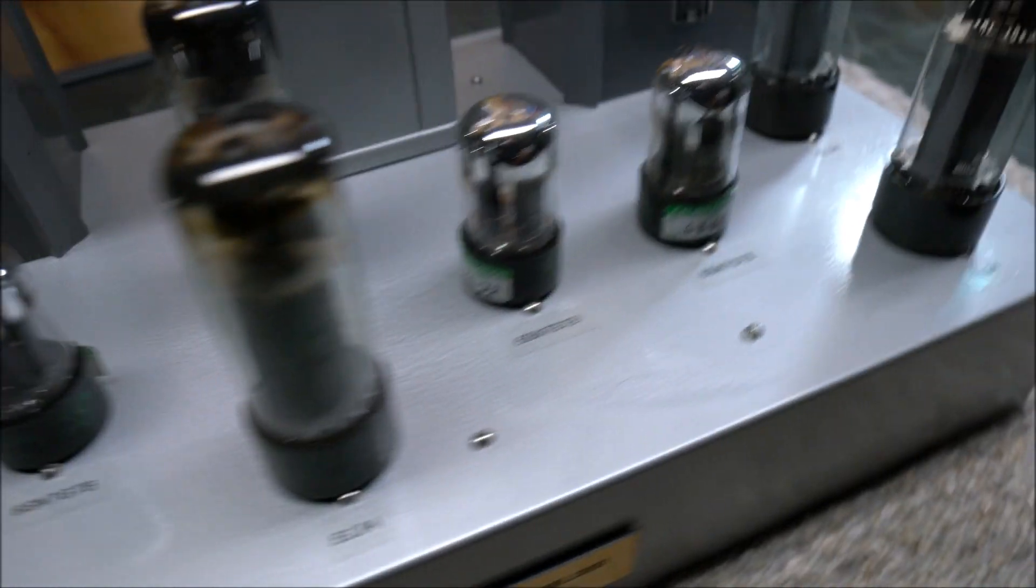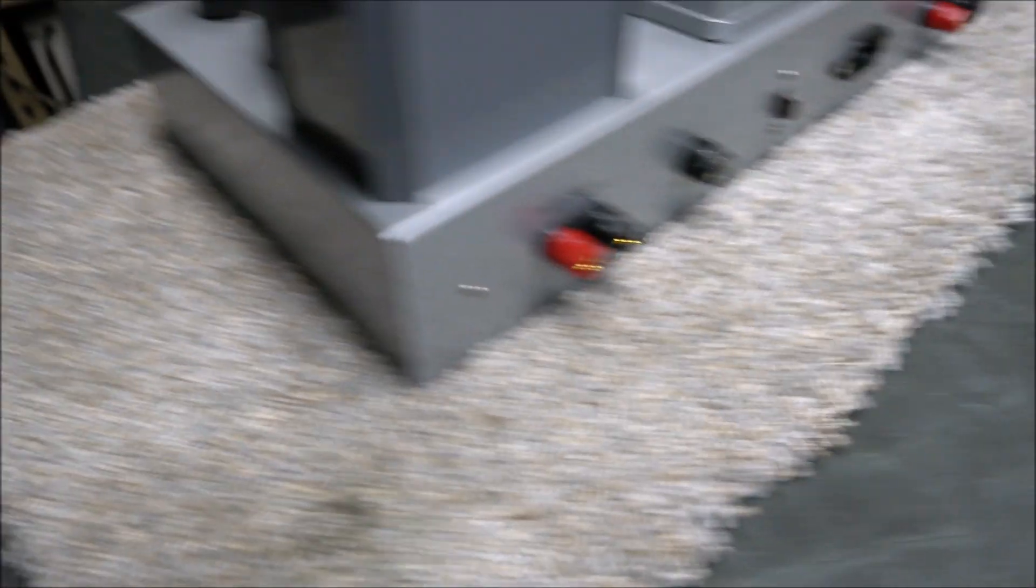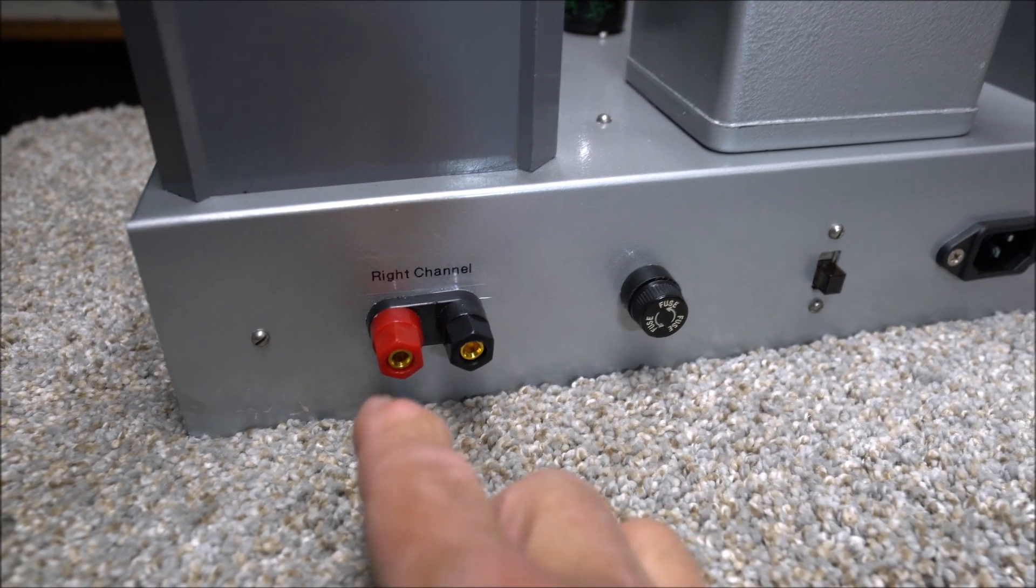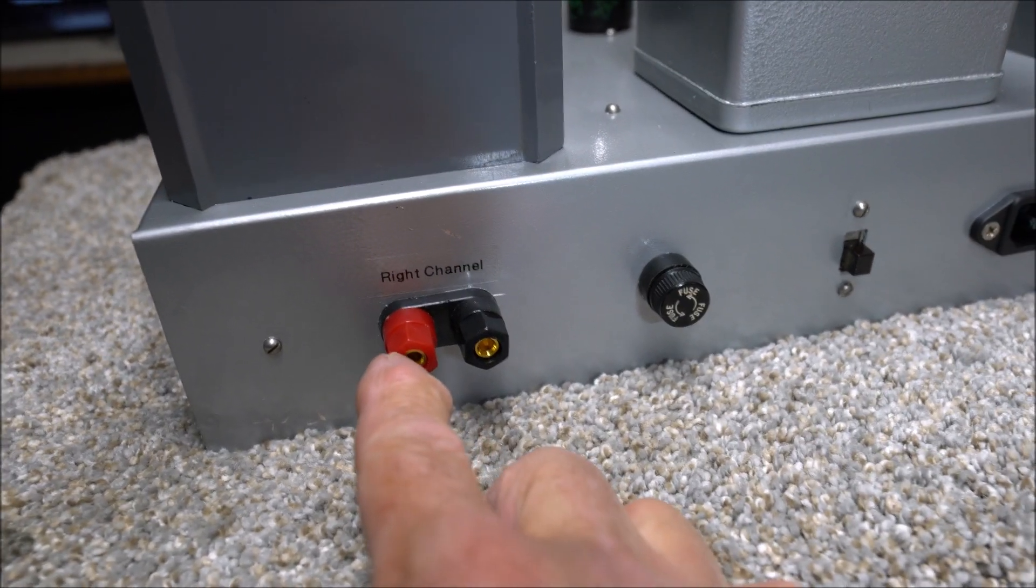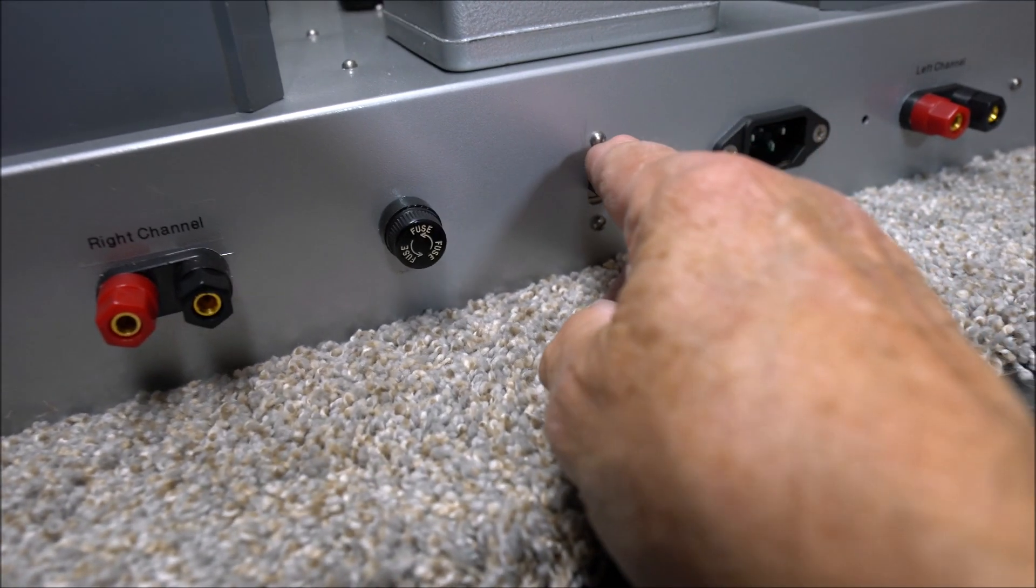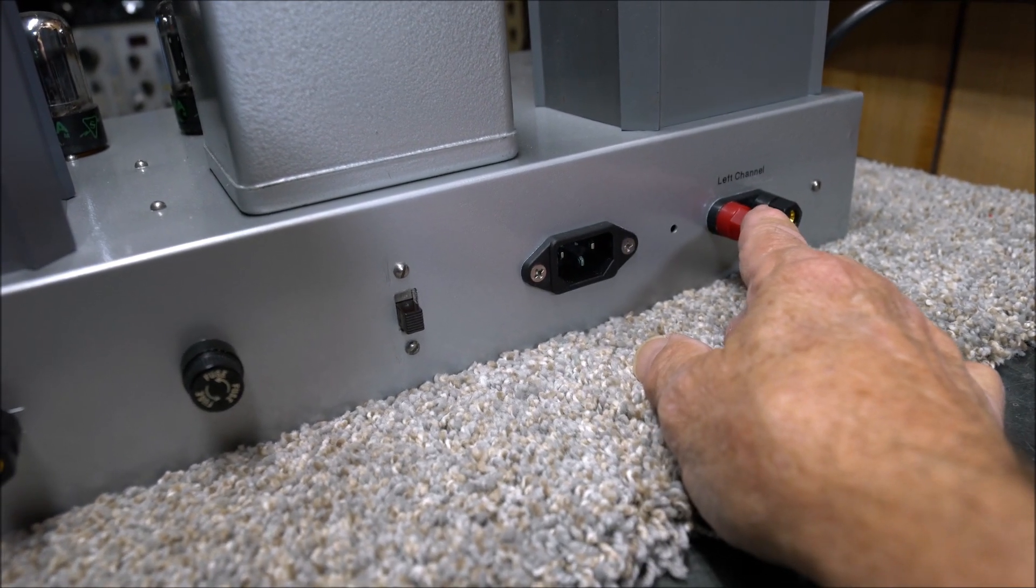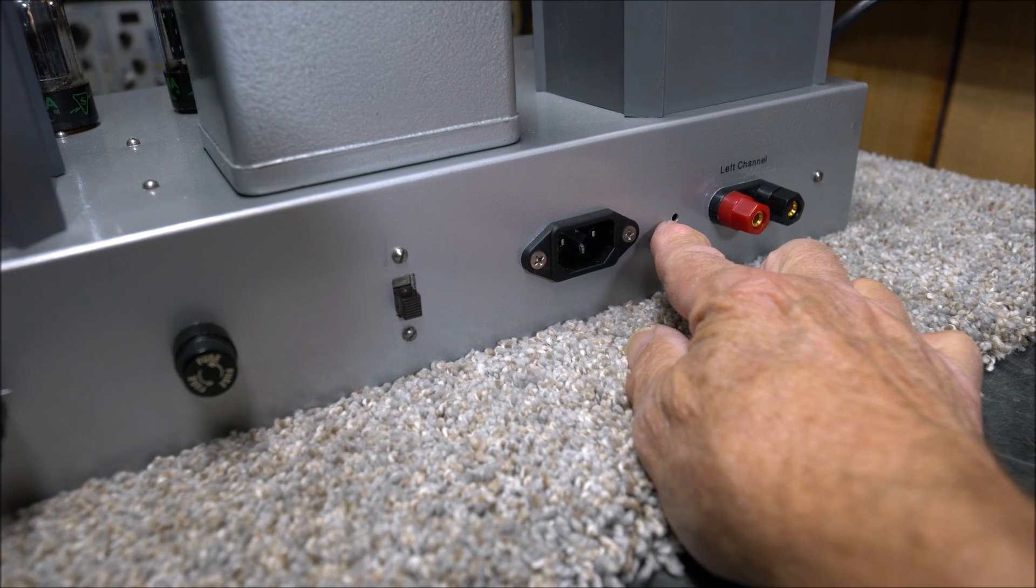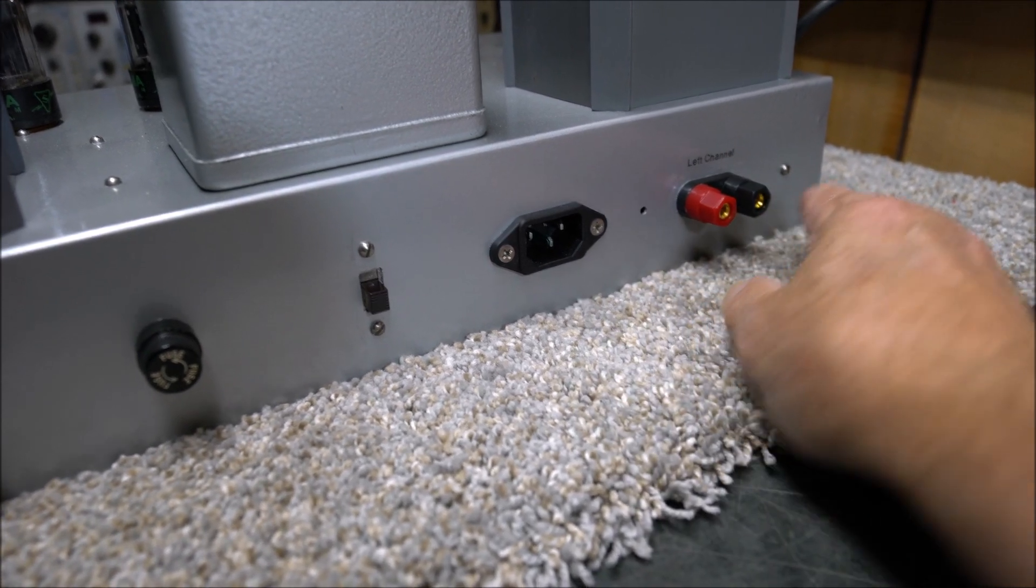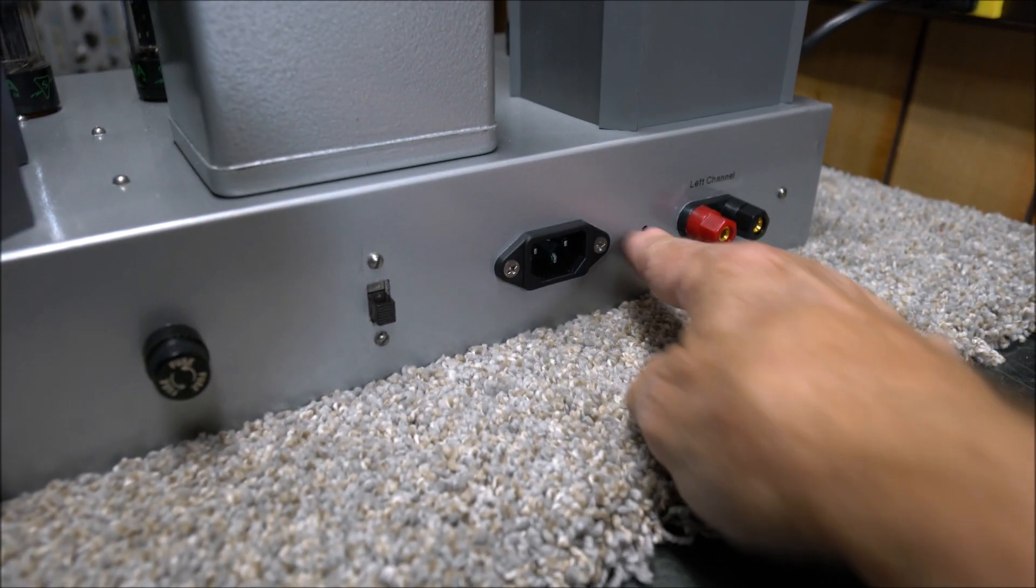On the back, I've gotten to where I pretty much use the same layout all the time. Now these UTC transformers don't have a 4, 8, 16 ohm convenient output, you have to actually wire them. So I've got them wired for 8 ohms. I use the IEC connector so I don't have that power cord dangling everywhere. And right there is the only mystery hole in the whole amplifier. I don't know what I was going to put there.